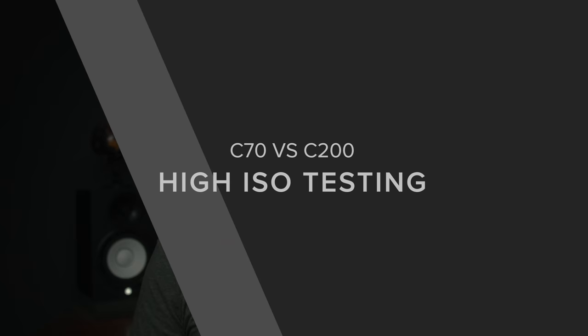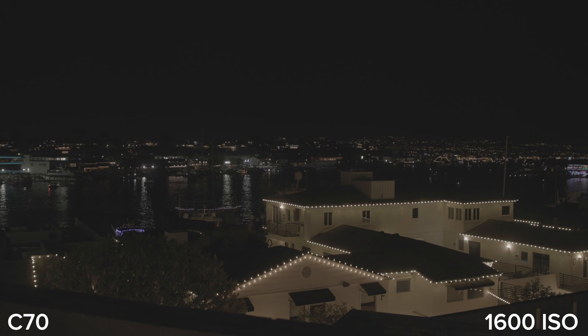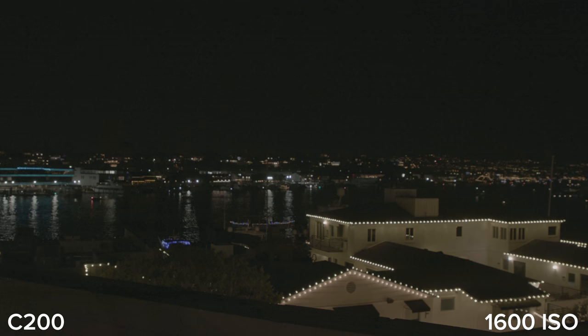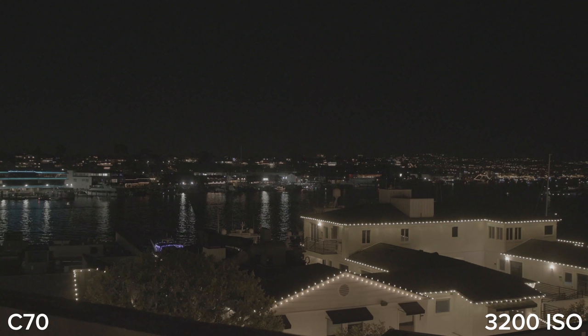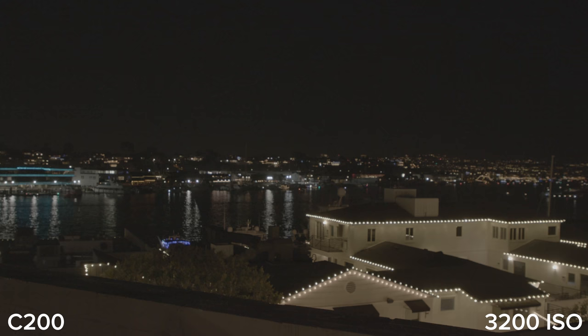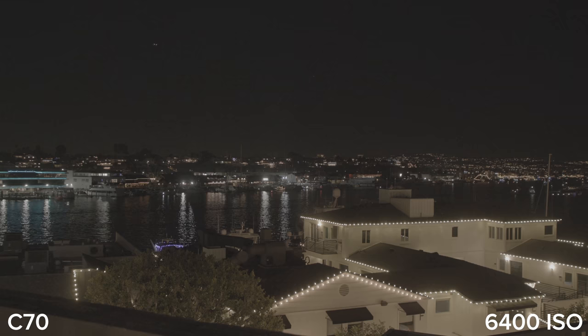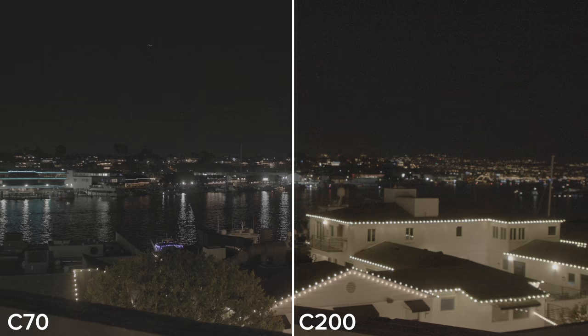Next up is high ISO. With the high ISO testing I noticed some interesting things. The C70 was better, but not exactly what I expected. First up is 1600 ISO — here's the C70. I think this is an incredibly clean image, actually cleaner than the C200 at its native ISO of 800, and similar to the C200 at ISO 400. Now here's the C200 at 1600 — it's a totally usable ISO. It does have some noise, but as soon as you put a light on it kind of goes away. Next up is 3200 ISO — here's the C70 and here's the C200. This is kind of the upper limit of where I can comfortably use the C200. Next up is 6400, which is where things got interesting. The C70 still looks better here, but they look a lot closer than at 1600 and 3200, where the C70 was exponentially cleaner.